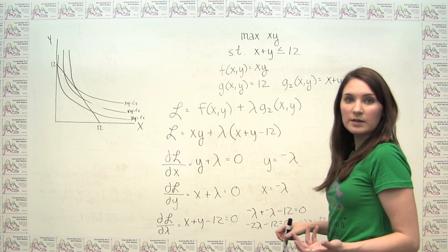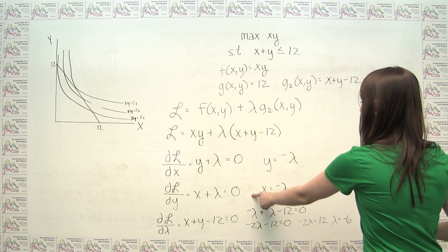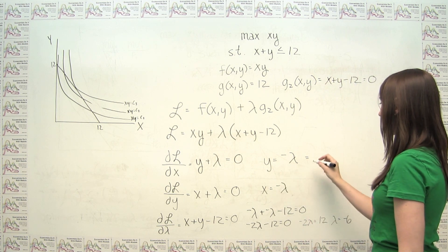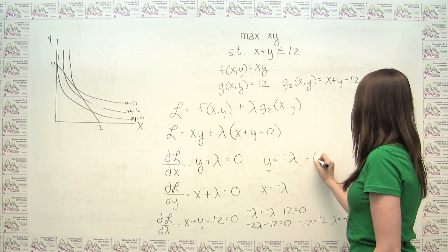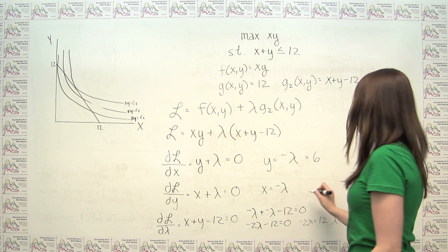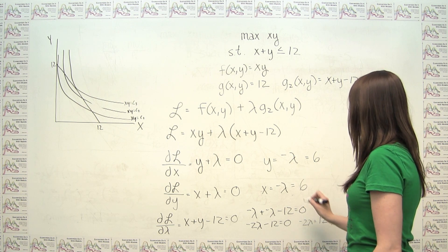Once we know that lambda equals negative 6, our x and our y are very easy. So then, if lambda is negative 6, y is just negative negative 6, or 6. And x is also just negative negative 6, or 6.